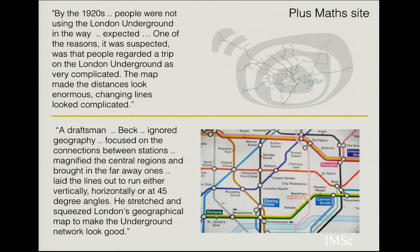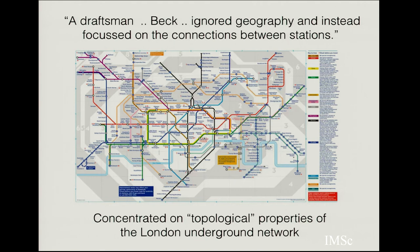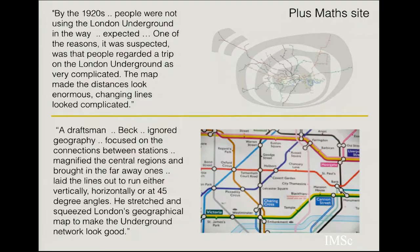In the spatial map, if you assume the train moves at constant velocity, the time to travel between two well-separated stations is fairly long. This was simplified by a draftsman called Beck, who ignored all the geographical implications. He focused on just the connections between stations, magnified the central region, brought in the far-away ones, and got the lines to run either vertically, horizontally, or at 45 degrees, involving some stretching and squeezing of the original picture.